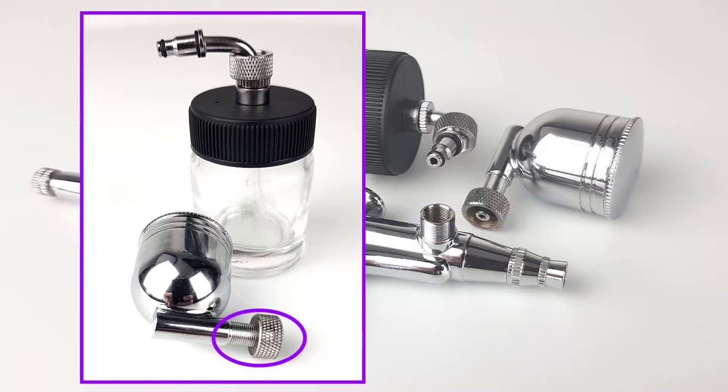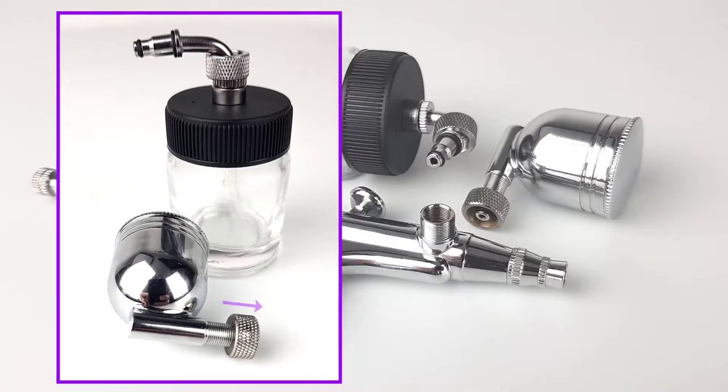Once the paint feed jar is fitted into the desired position, the locking nut travels down the thread on the arm and provides a tight fit against the airbrush to prevent movement.